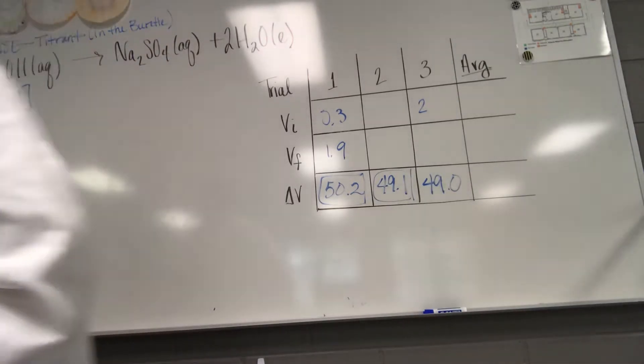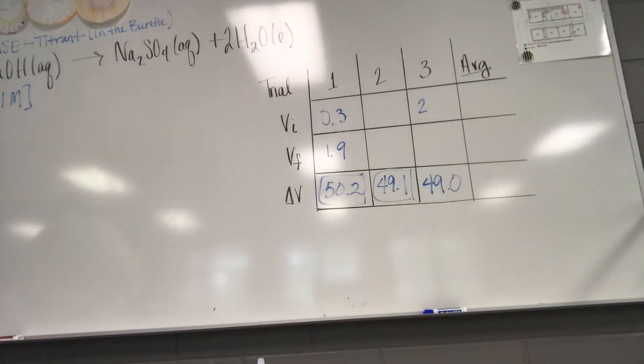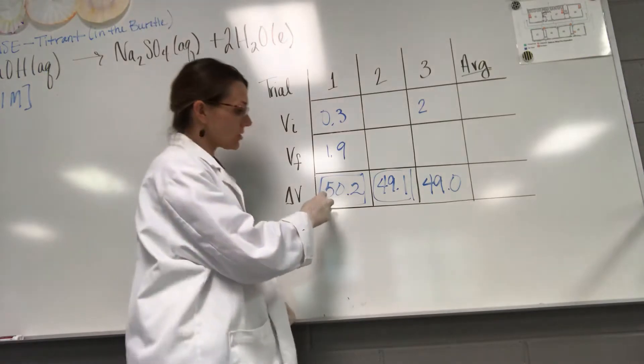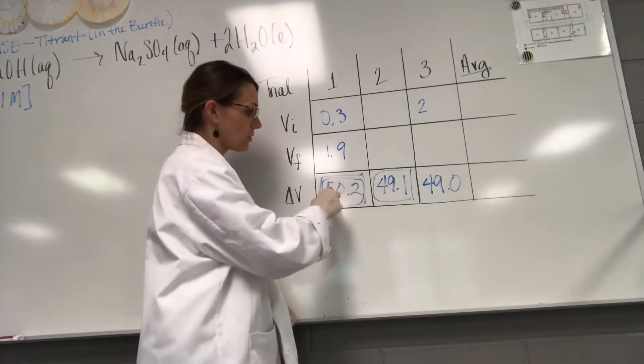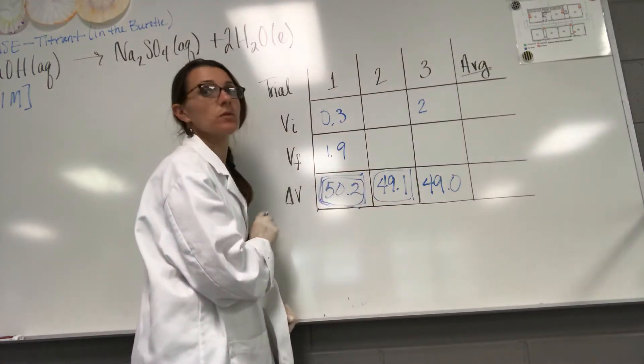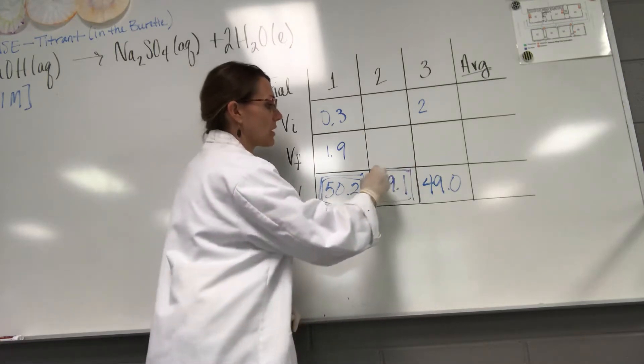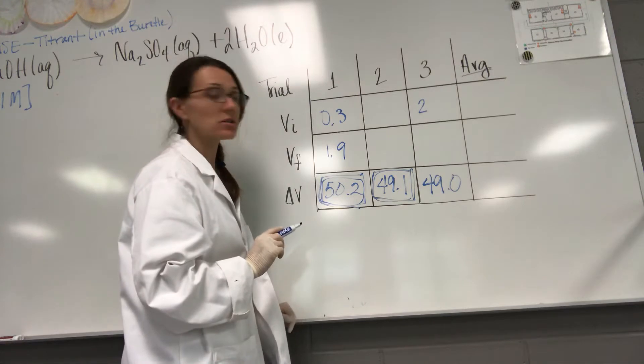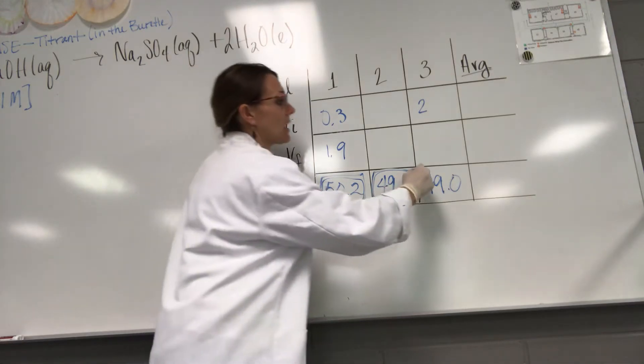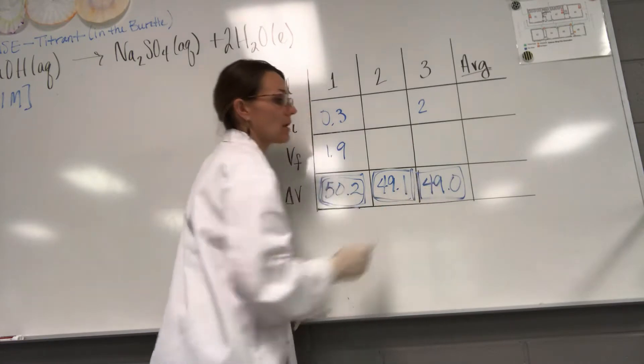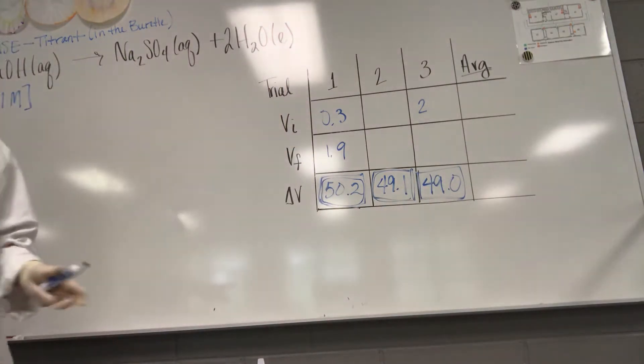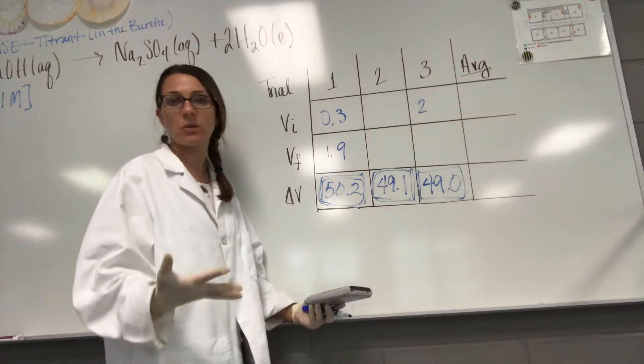All right guys, I finished all three trials. We have successfully neutralized the acid. For trial one it took 50.2 milliliters of the 0.1 molar sodium hydroxide. Trial two took 49.1 milliliters of 0.1 molar sodium hydroxide, and trial three was 49 milliliters. We would expect to see consistency oftentimes when you're doing your titrations.